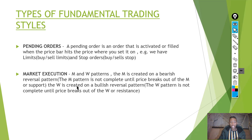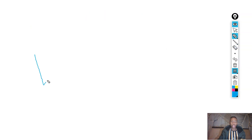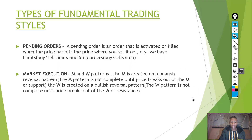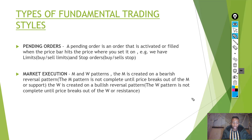The W is created on a bullish reversal pattern — the W pattern is not complete until it breaks out of the W's resistance. Similarly to the M, we have three types of W's: an increasing W (low and a lower high), a normal W (low and a low), and a decreasing W (low and a lower low). I prefer using market executions because you get to actually profit on the whole movement and volatility spike of the market.